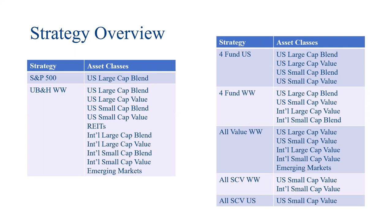Now we're going to flip over to the four fund strategies. We have a U.S. version where all of the asset classes are in the United States, and then a worldwide version where half of the asset classes are in the United States and the other half are in international markets. In this case, we're trying to hit the four corners of the market: large cap blend, large cap value, small cap blend, and small cap value. You can see in the international worldwide four fund strategy, we put the large cap value and the small cap blend in the international markets as well.